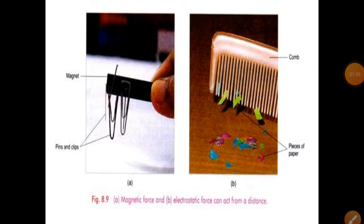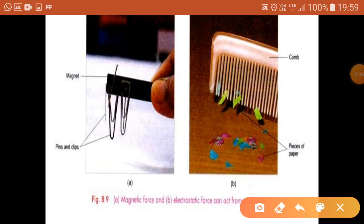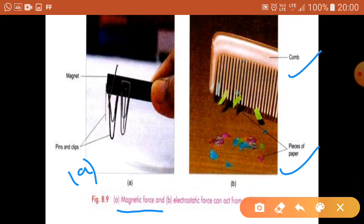In this slide you can see two types of non-contact forces: magnetic force shown in figure A, and electrostatic force shown in the next figure. A charged comb is attracting pieces of paper, and similarly the magnet attracts pins or clips. These are non-contact forces — initially they were not in physical contact, yet they experience a force of attraction.